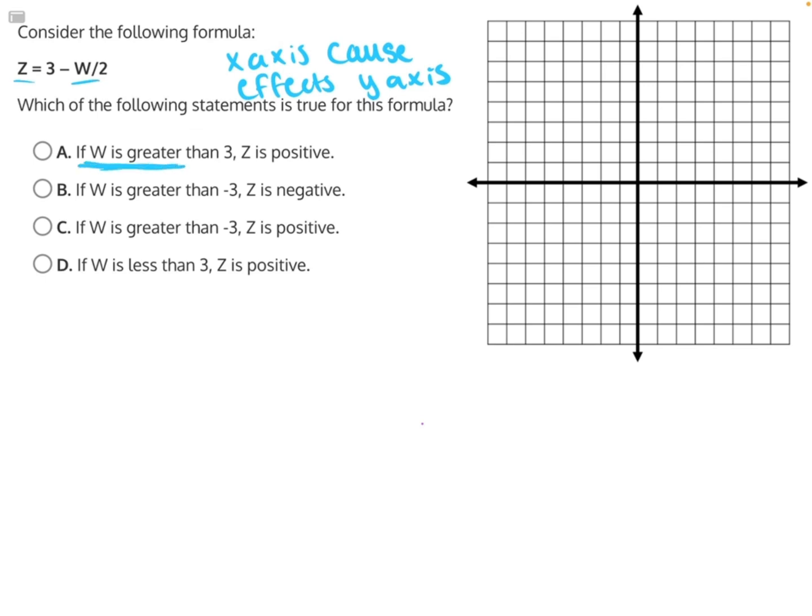If w is blank in every single answer choice, then z is blank. So w is what's affecting z, so we can label w as our x-axis and z as our y-axis.